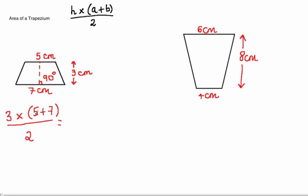5 plus 7 is 12, so we're doing 3 times 12, which is 36, divided by 2. 36 divided by 2 is 18, so the answer here is 18cm squared.